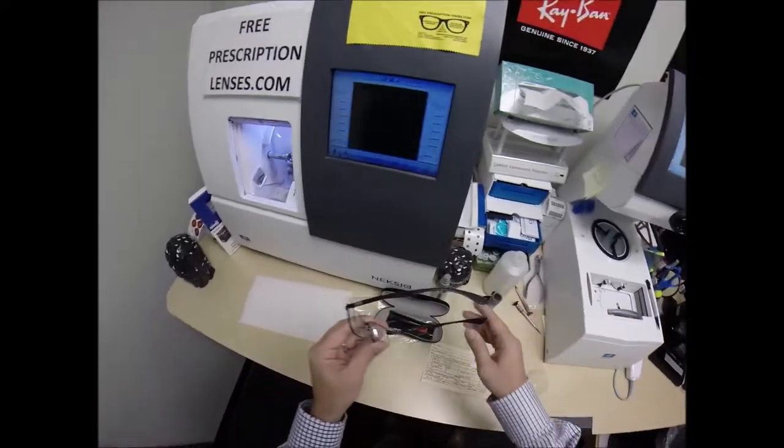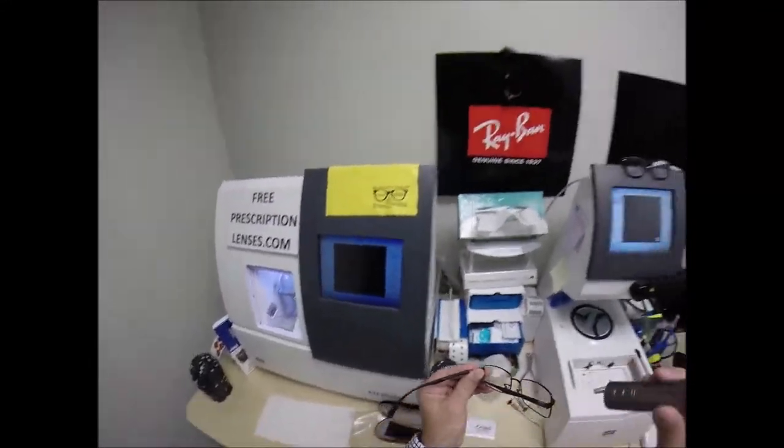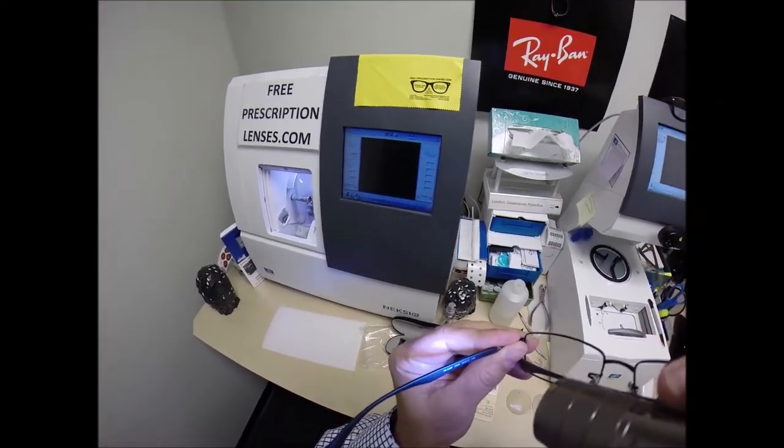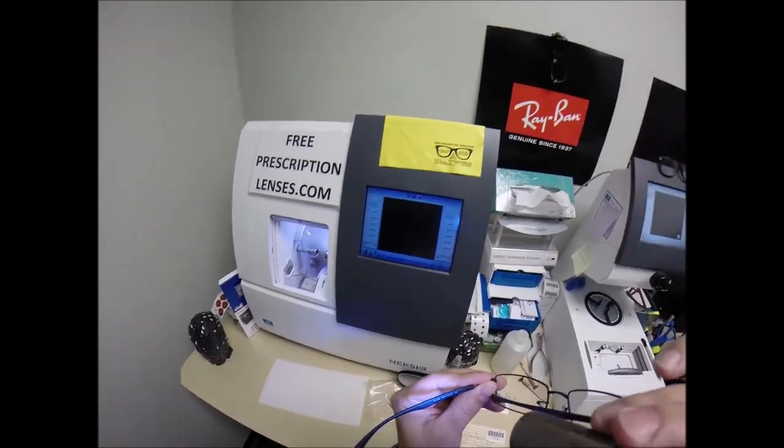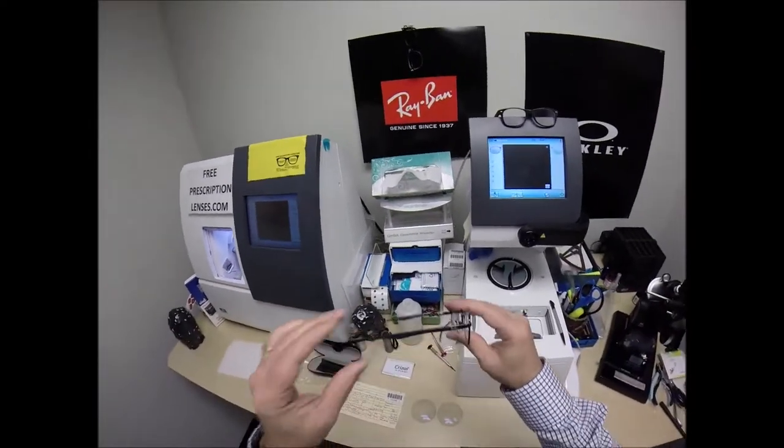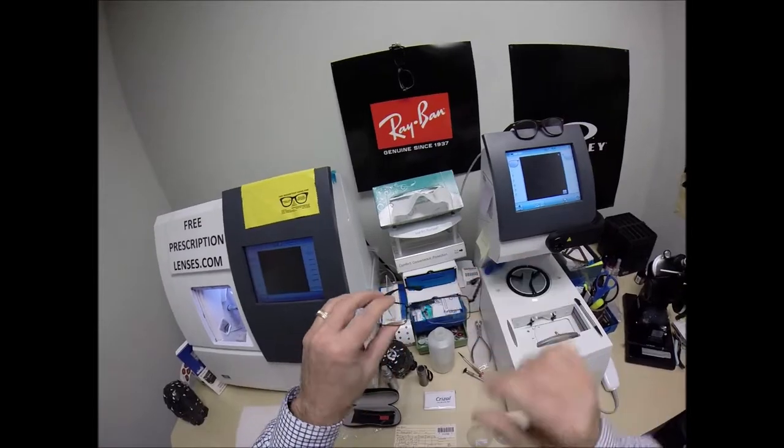Of course it comes with a little plastic sleeve on the left temple to protect the temples from rubbing together during shipping. This is the Ray-Ban Light Force made in Italy. This is the Ray-Ban 6286, color 2509, which is the matte black in the 54 eye size. I believe this frame comes in two sizes and several colors, but super lightweight frame. Again, that's why it's part of the Light Force series.